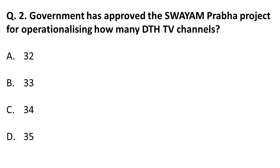Moving to the next question: the government has approved the Swayam Prabha project for operationalizing how many DTH TV channels? The answer is 32. Remember, the number of DTH TV channels under the Swayam Prabha project is 32.